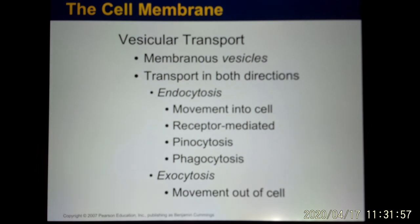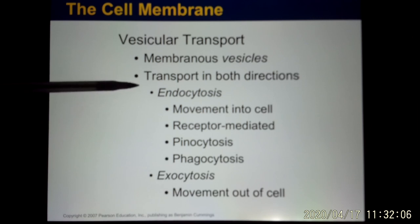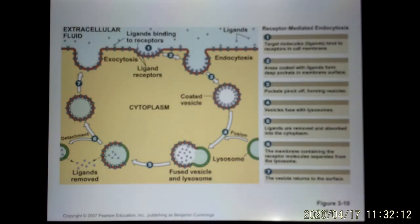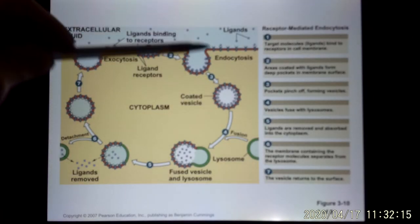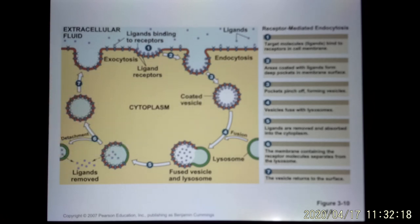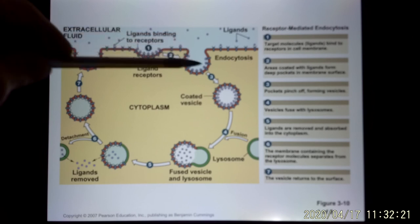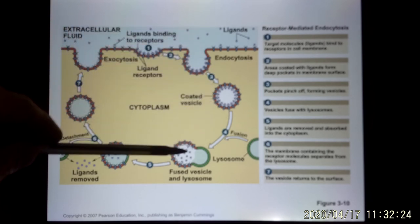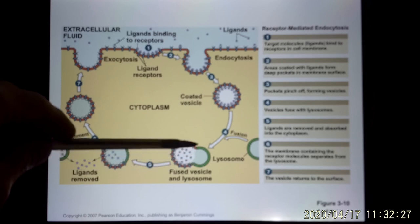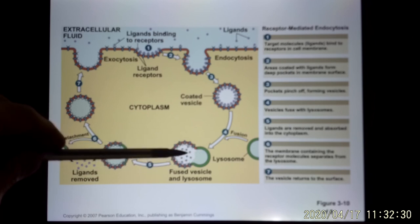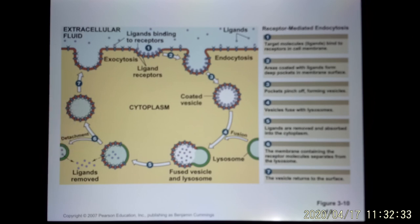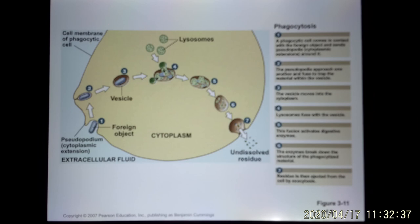Vesicle transport is when the cell membrane changes structure to move molecules in or out. Moving molecules into the cell is called endocytosis; moving them out is called exocytosis. White blood cells use endocytosis to take in bacteria or particles, then use lysosomes — organelles inside the cell — to digest and kill the bacteria.